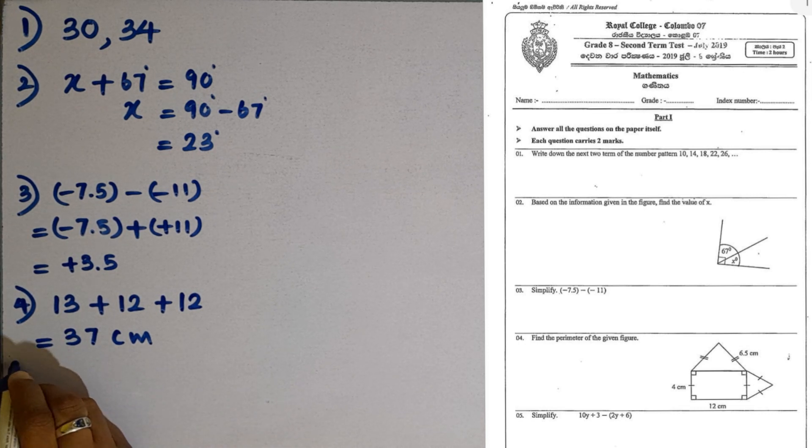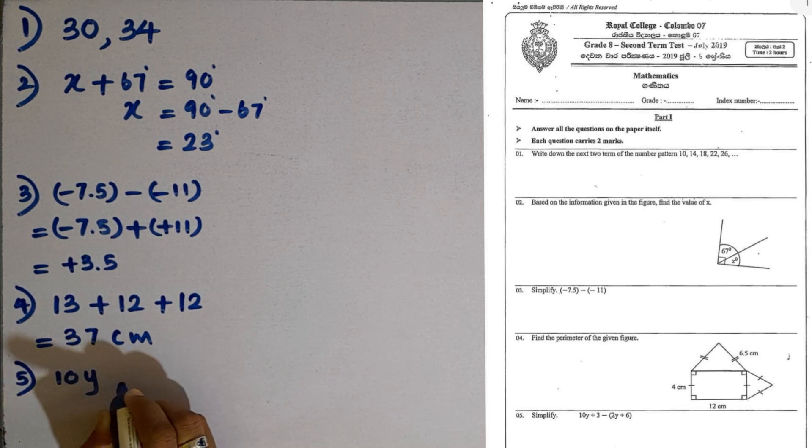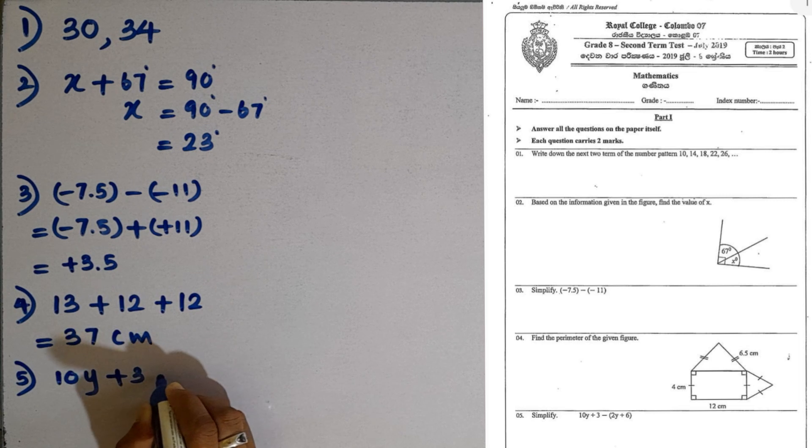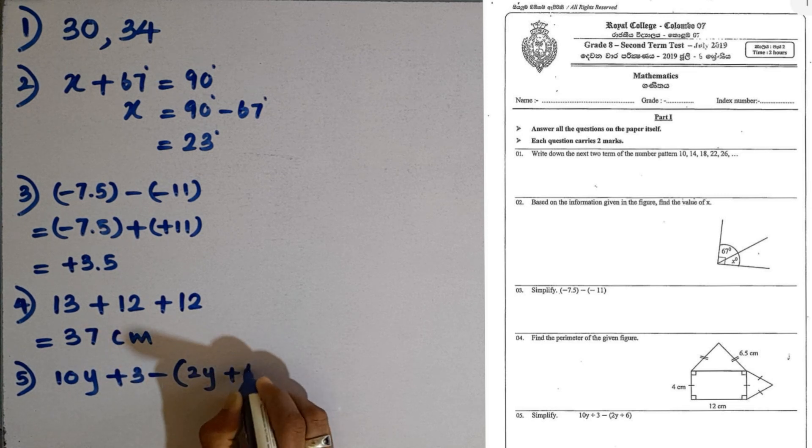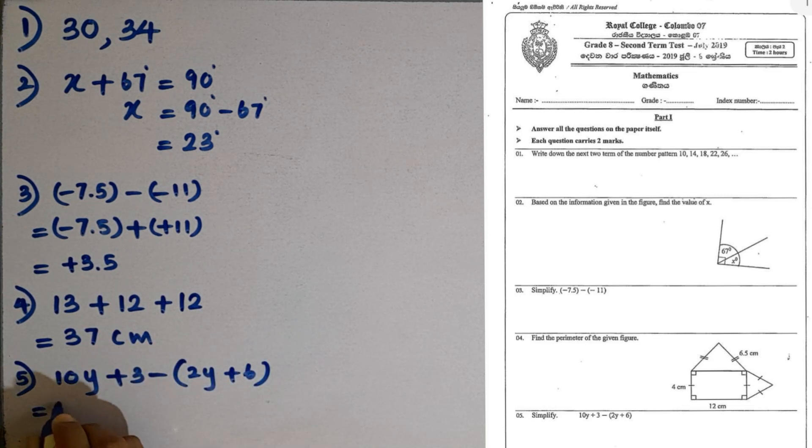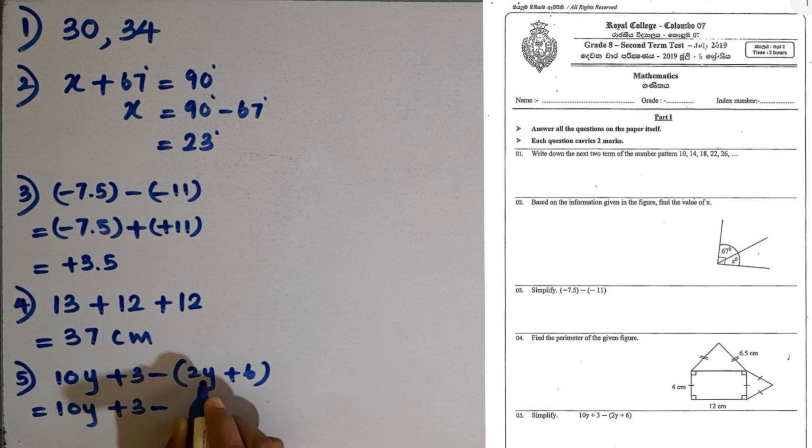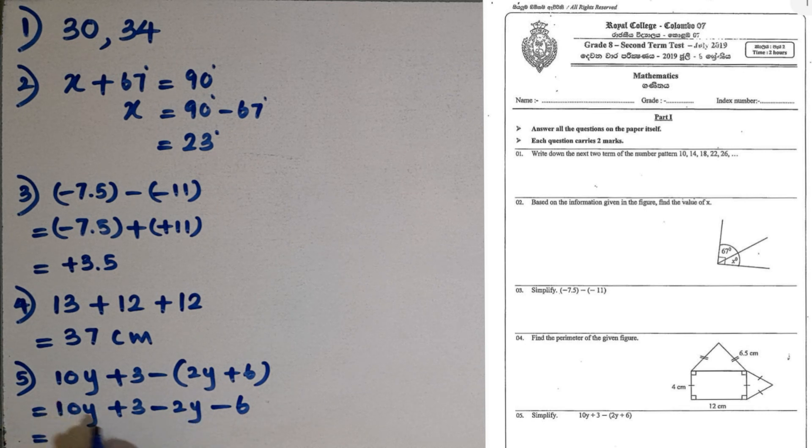Question number 5. Simplify 10Y plus 3 minus 2Y plus 6. First, we have to remove the bracket. 10Y plus 3. When removing the bracket, the sign of 2Y becomes negative, minus 2Y, then also minus 6. We can simplify 10Y and minus 2Y, that is 8Y. Then plus 3 minus 6 is minus 3. This is the final answer.